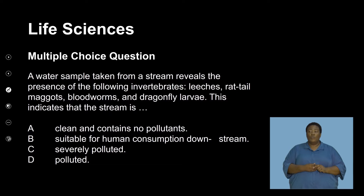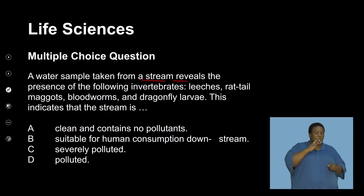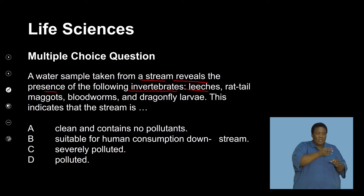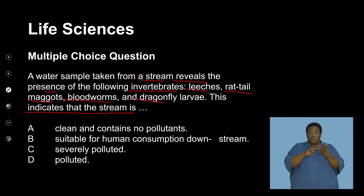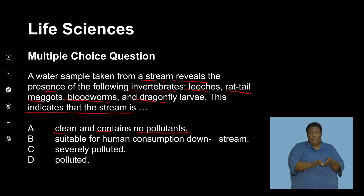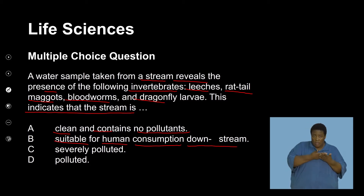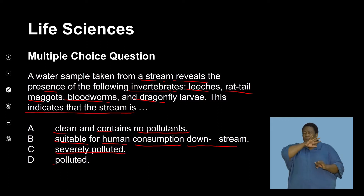A question to think about: a water sample taken from a stream reveals the presence of the following invertebrates — leeches, a rat-tailed maggot, bloodworms, and dragonfly larva. This indicates that the stream is: A, clean and contains no pollutants; B, suitable for human consumption downstream; C, severely polluted; or D, polluted.